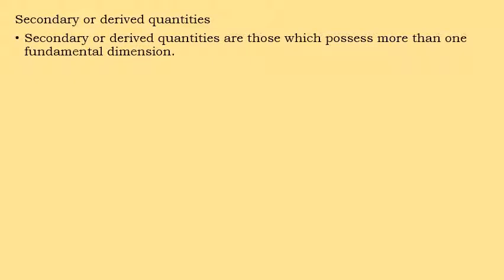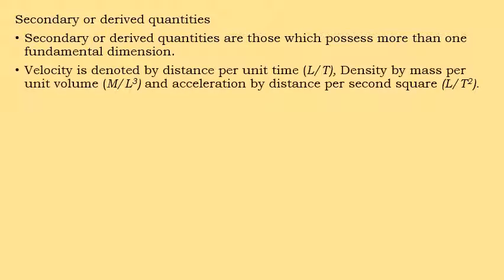Next, secondary or derived dimensions. These secondary or derived dimensions are those which possess more than one fundamental dimension. For example, take velocity — velocity is denoted by meters per unit time, that is meters per second. So the length is denoted by L and time is denoted by T, making it L by T.